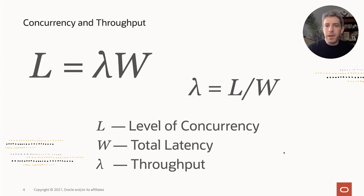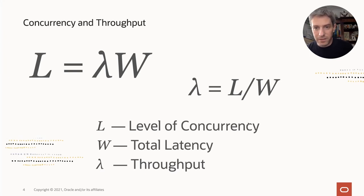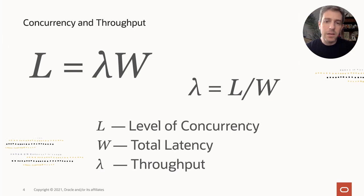The metric we wish to optimize when concurrency is concerned is throughput, or how many transactions we can serve per second, because the more transactions we can serve on one machine, the fewer machines we need. The throughput in a system that serves requests concurrently is governed by this formula called Little's Law. It says that if the system is stable, the level of concurrency L equals the arrival rate lambda times the latency W. For example, if requests arrive at 1000 per second and each transaction takes 10 milliseconds, then our level of concurrency is 10.